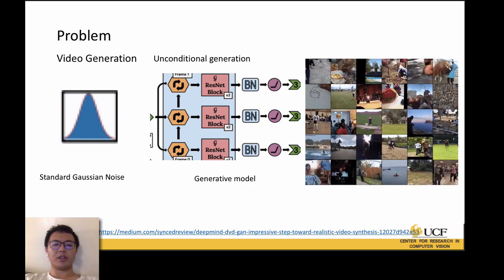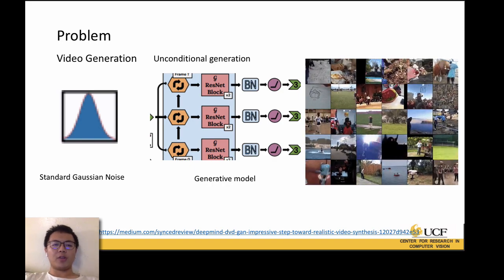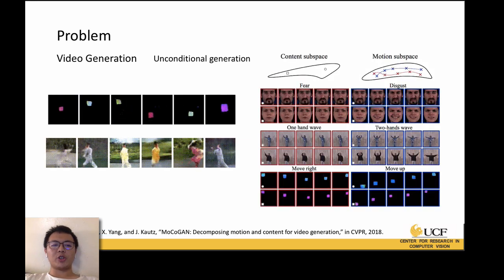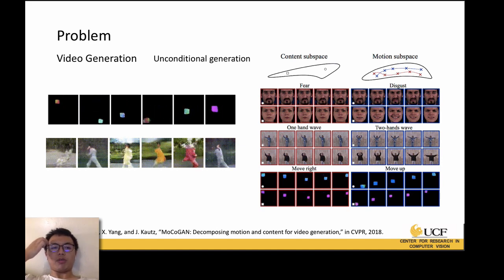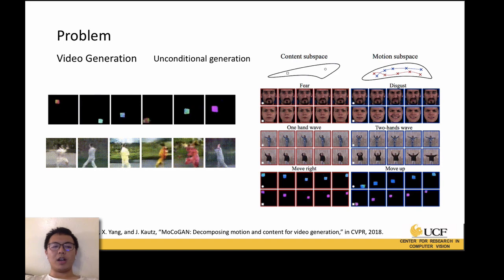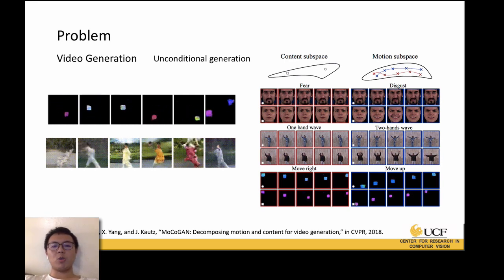Here is an example of unconditional video generation, which is DVD-GAN. It uses standard Gaussian noise as input to generate longer, high-resolution videos on a complex dataset, Kinetics-600. Another example of unconditional generation is MoCoGAN. It divides video clips into content and motion — content consists of the objects, motion contains the dynamics. It uses random vectors as input, where the content part is fixed and the motion part can be viewed as a stochastic process.